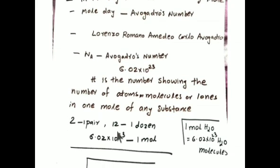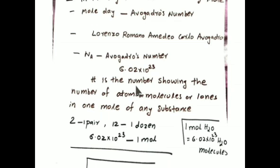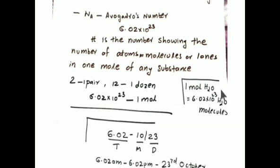Avogadro's number is a number showing the number of atoms, molecules, or ions in one mole of any substance. One mole of molecules contains 6.02 × 10²³ molecules. One mole of atoms contains 6.02 × 10²³ atoms. One mole of ions contains 6.02 × 10²³ ions. For example, one mole of water contains 6.02 × 10²³ water molecules. This is the chemistry-level explanation.